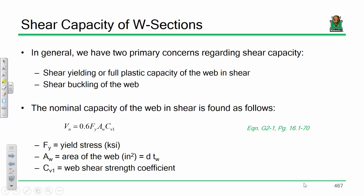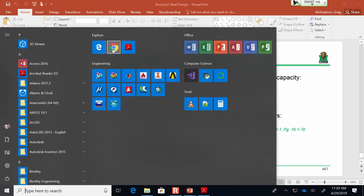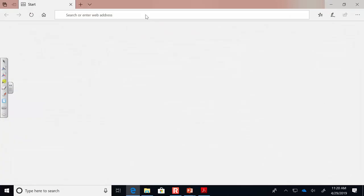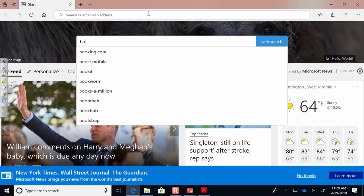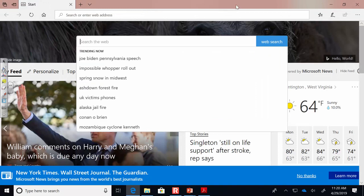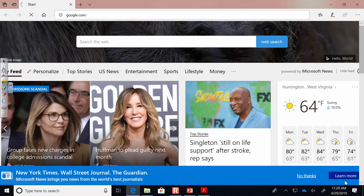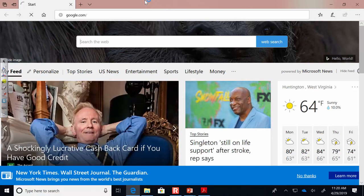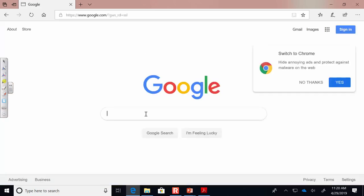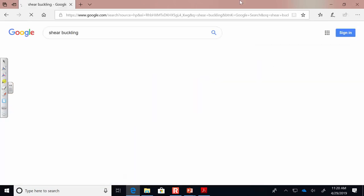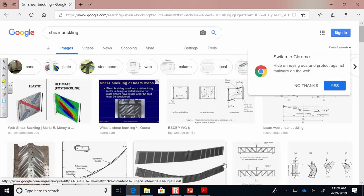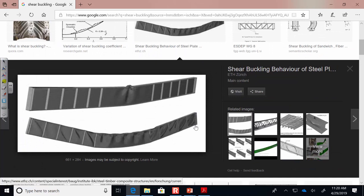So, in general, we have two primary concerns regarding shear capacity. We have shear yielding, and we have shear buckling.